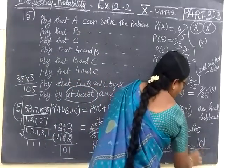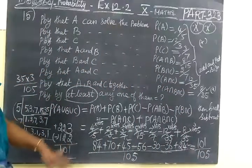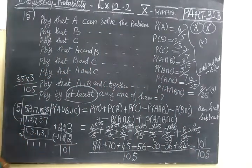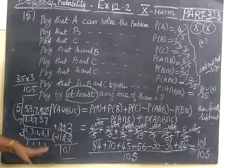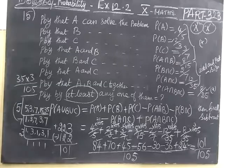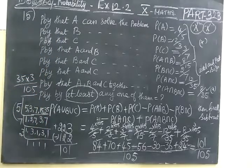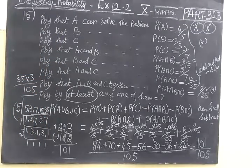When you do this sum often, you come to know the answer also, and you come to know the LCM also. So LCM 105, answer 101 by 105. And this is very very important question. Many times it is asked in the future. Thank you.